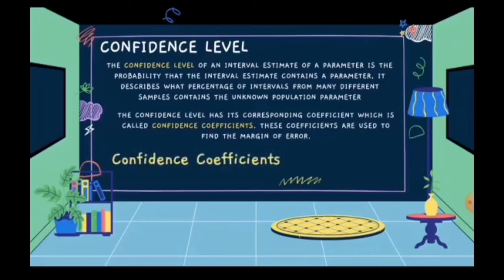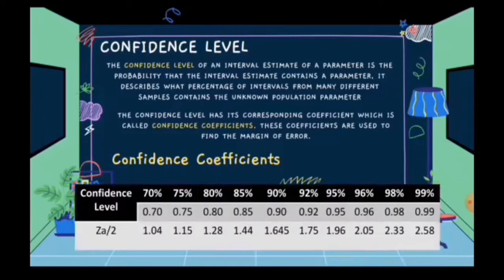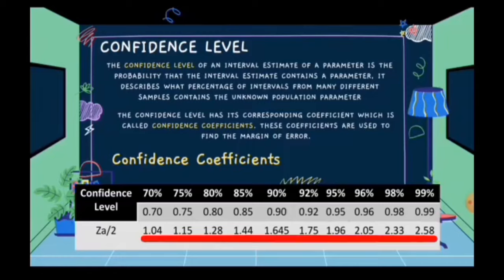There are different confidence levels. If you are testing a hypothesis, you need a confidence level or the margin of error. As shown here, confidence levels are usually 99%, 98%, 96%, 95%, 92%, 75%, 70%, or in decimal: 0.70, 0.75, 0.80, and so on. Below these are their corresponding confidence coefficients.